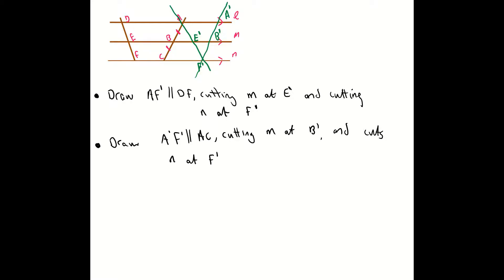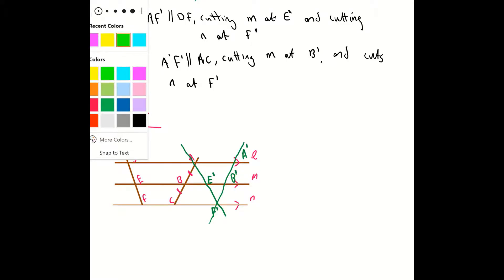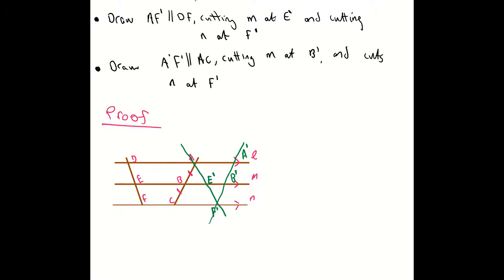The next step in our process is to write down our proof. When we're doing our proof, what we're going to try and do is use congruent triangles. Congruent triangles are triangles which have the exact same shape and exact same size — the same angles and the same side lengths. What we're going to try and prove is that triangle ABE dash is congruent to triangle E dash F dash B dash. We're trying to prove that those two triangles are congruent.